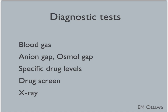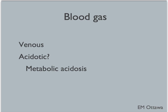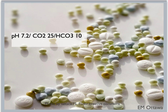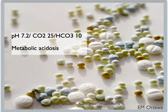Diagnostic tests can include blood gas, anion gap, osmogap, specific drug levels, drug screen, and x-ray. First, blood gas. A lot of toxins create morbidity and mortality by creating metabolic acidosis. Therefore, we often get a blood gas telling us whether the patient is acidotic or not. Getting a venous blood gas will often suffice instead of an arterial one. In our patient, his blood gas shows a pH of 7.2, which is acidotic. His bicarb is low, pointing towards a metabolic acidosis. In compensating for that acidosis, he's blowing off his CO2, causing a low CO2. Therefore, our patient has a metabolic acidosis likely because of this toxin.